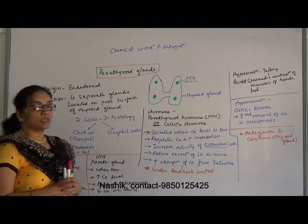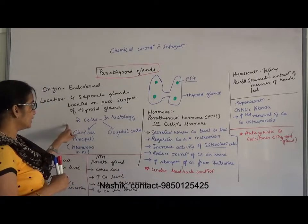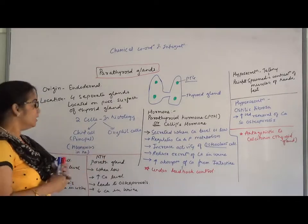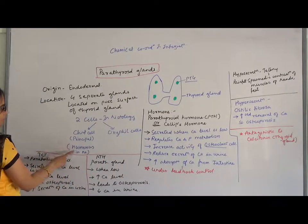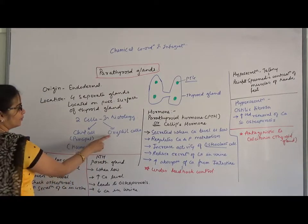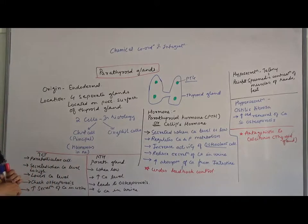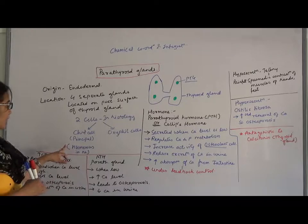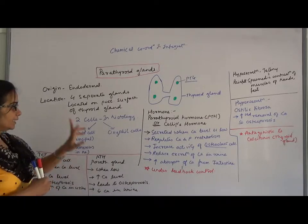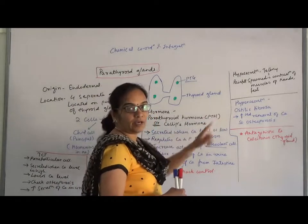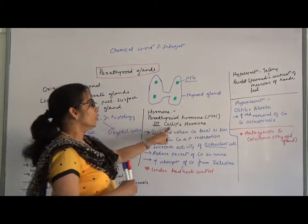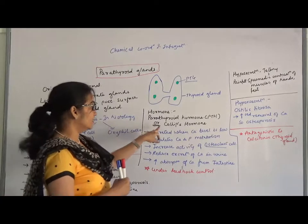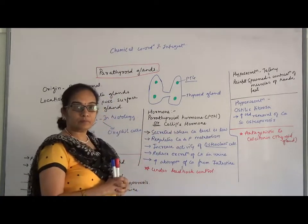Histologically, the parathyroid gland has two cells: the chief cells, also called principal cells, and the oxyphil cells. The chief cells are numerous in number compared to the oxyphil cells. The oxyphil cells are very few, though they are bigger cells. The chief cell secretes the hormone called parathyroid hormone, also called the Collip's hormone, because the scientist Collip discovered this particular hormone.